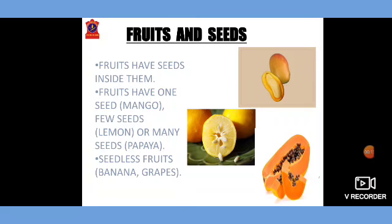Fruits and seeds. Fruits have seeds inside them. Some fruits have one seed, some have a few, while others have many seeds inside them. Fruits having one seed are mango, avocado, etc. Fruits with few seeds are lemon, orange, etc. Fruits with many seeds are papaya, watermelon, etc. There are also fruits which are seedless — for example, banana, grapes, etc.